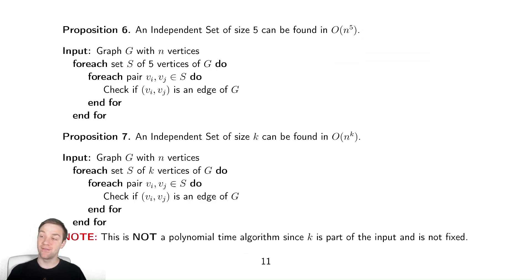If I wanted to determine if a graph had an independent set of size five, what I could do is write code that looks at every single possible set of five. You're going to loop over all possible sets of five vertices, and then for each pair within that set, check if it's an edge.